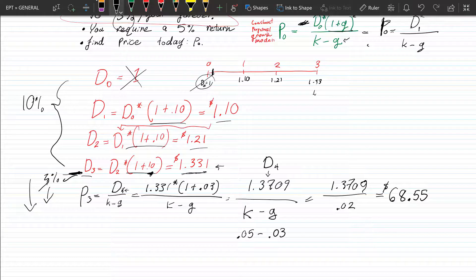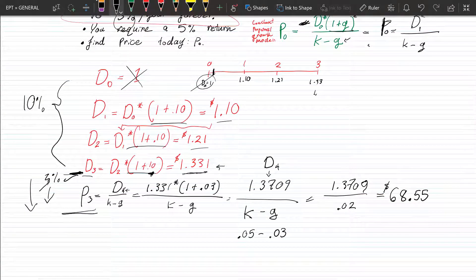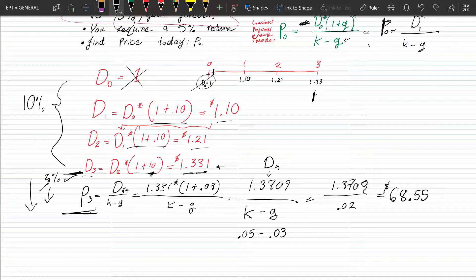So this number here, remember this is still all at period three. We're still all right here. We have the dividend for this period already though. We have $1.33 like we found right here. So what is this number? Well,